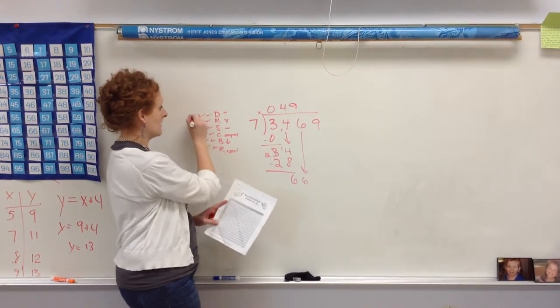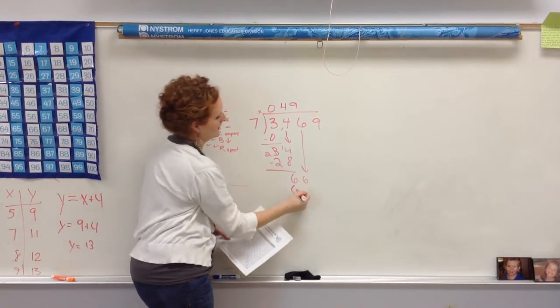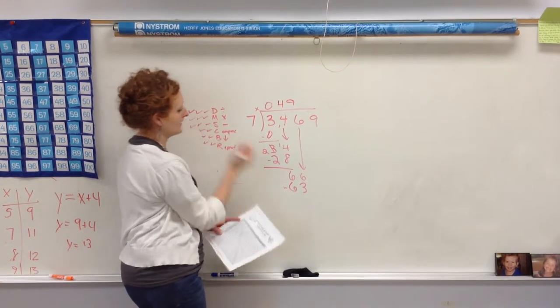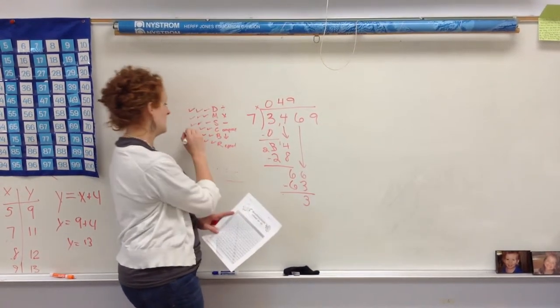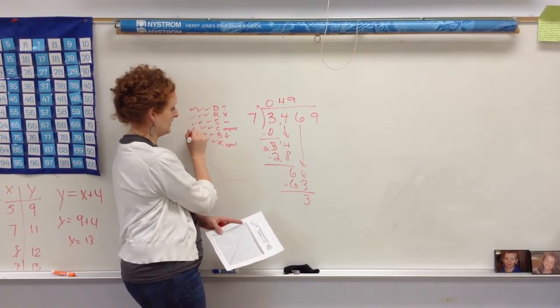So I've divided. Now I need to multiply. 9 times 7, 63. Now I'm going to subtract. 6 minus 3 is 3. Now I'm going to compare. 3 is less than 7. Yay, me. I'm doing good. So now I'm going to bring down my next number.